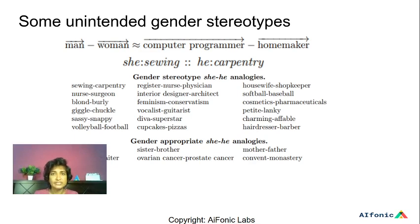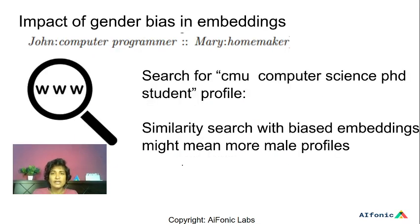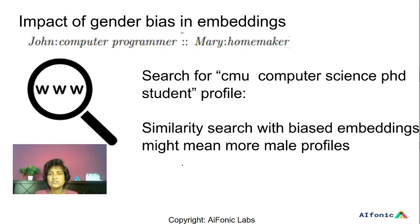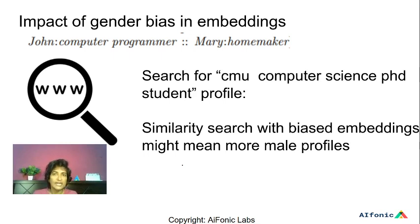So how do they do this, and what happens if they don't? If we do not de-bias embeddings, suppose we have an application where we're searching for CMU computer science PhD student profiles — we might end up with more male profiles than female profiles, because there may be a relationship like John to computer programmer as Mary to homemaker, where names of male students are more associated with computer programming than female students. So we want to try to fix these biases.